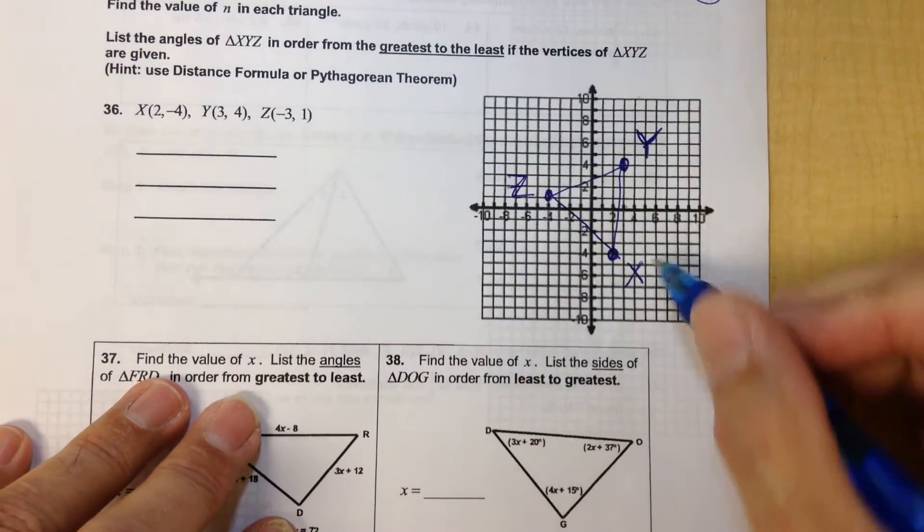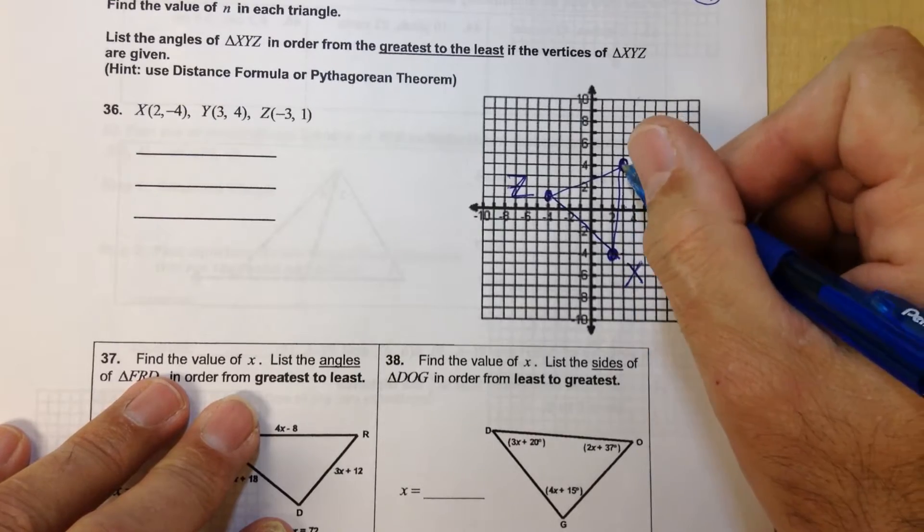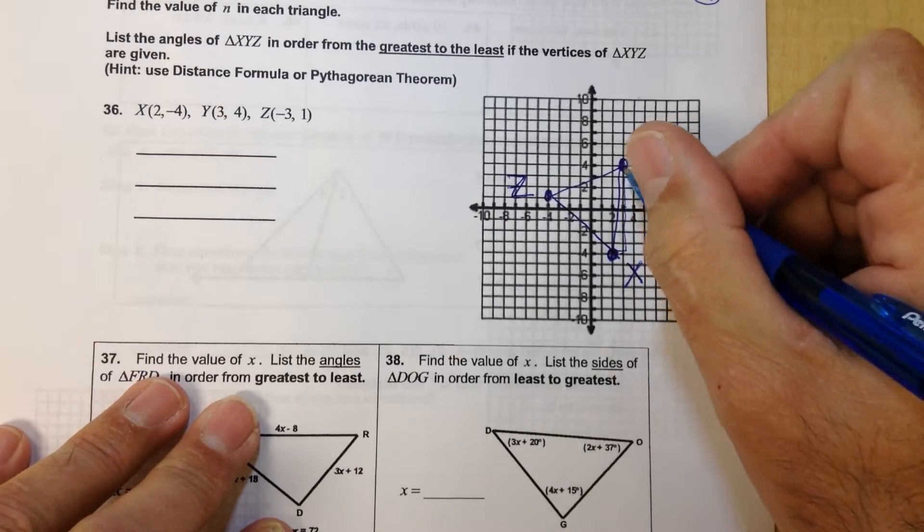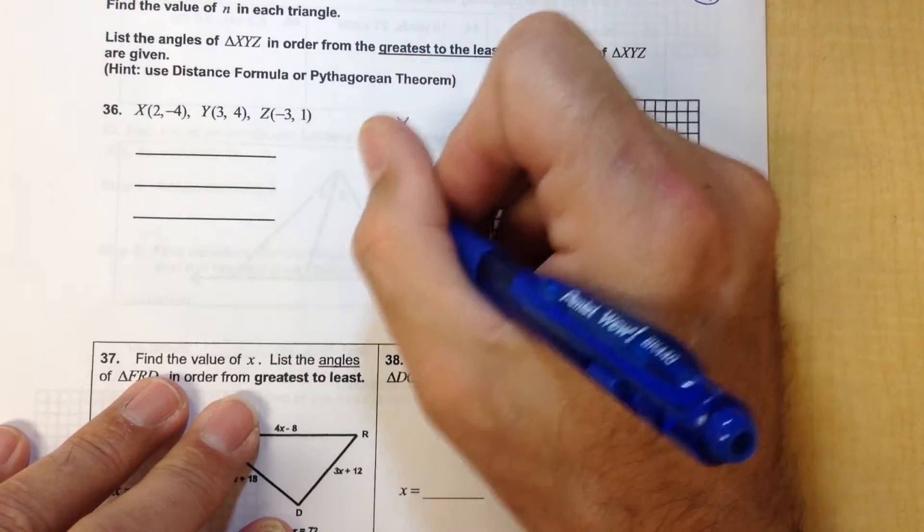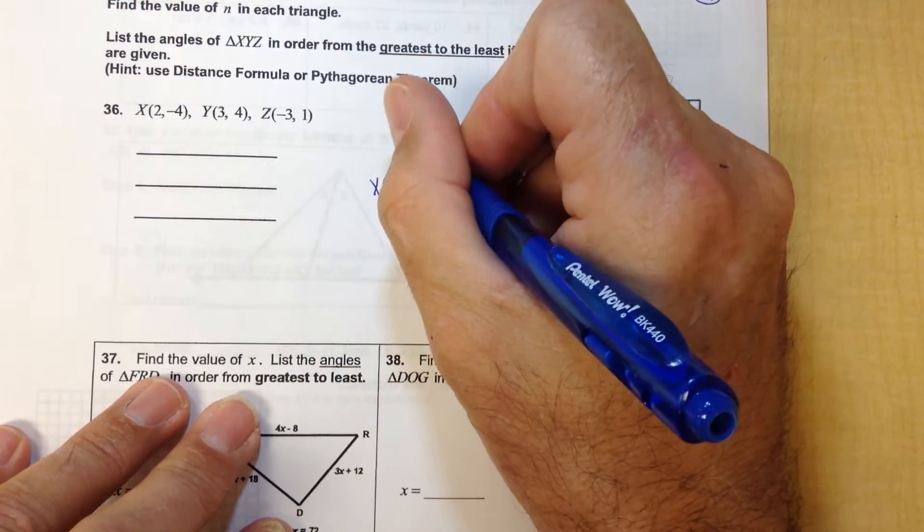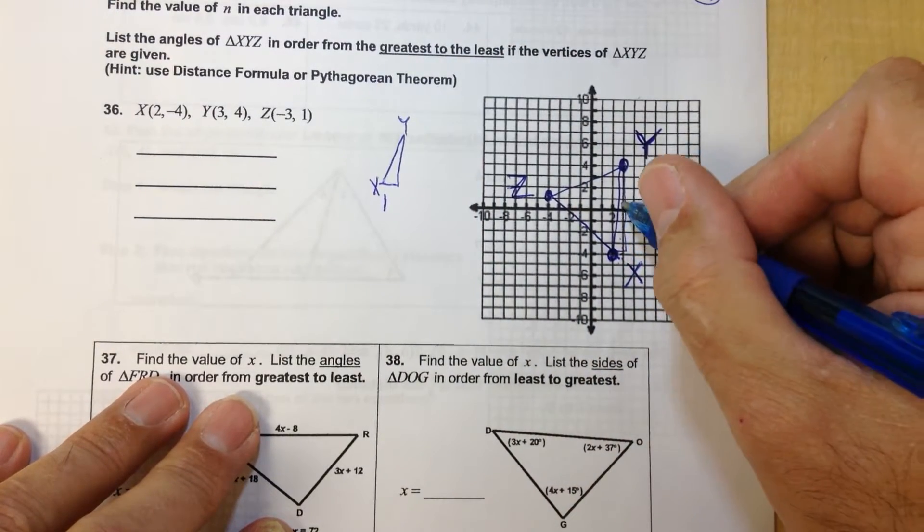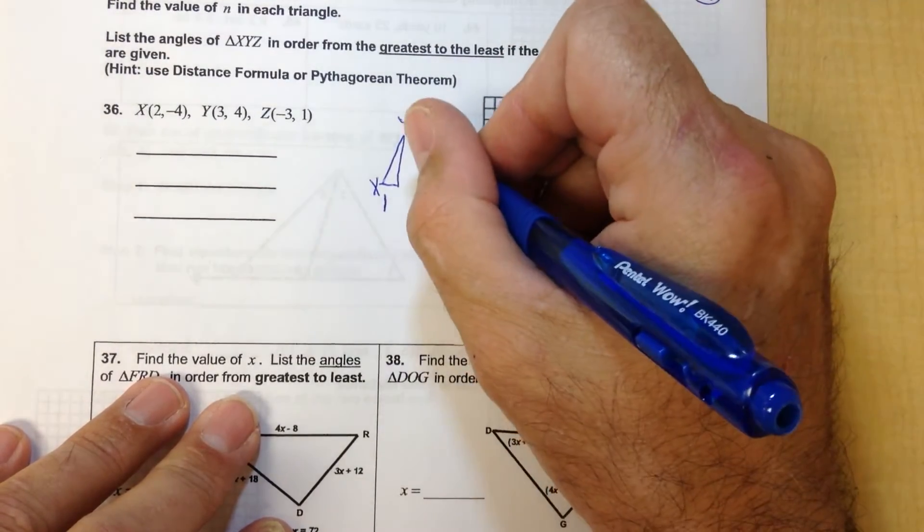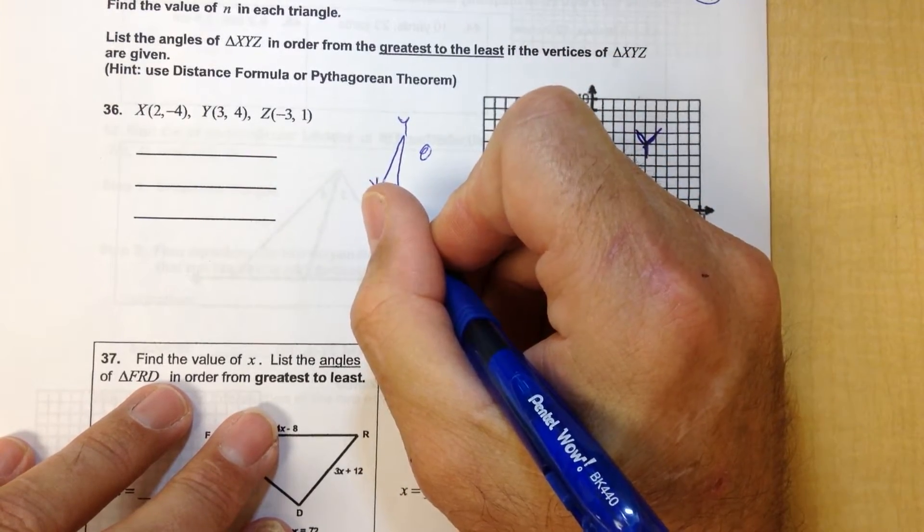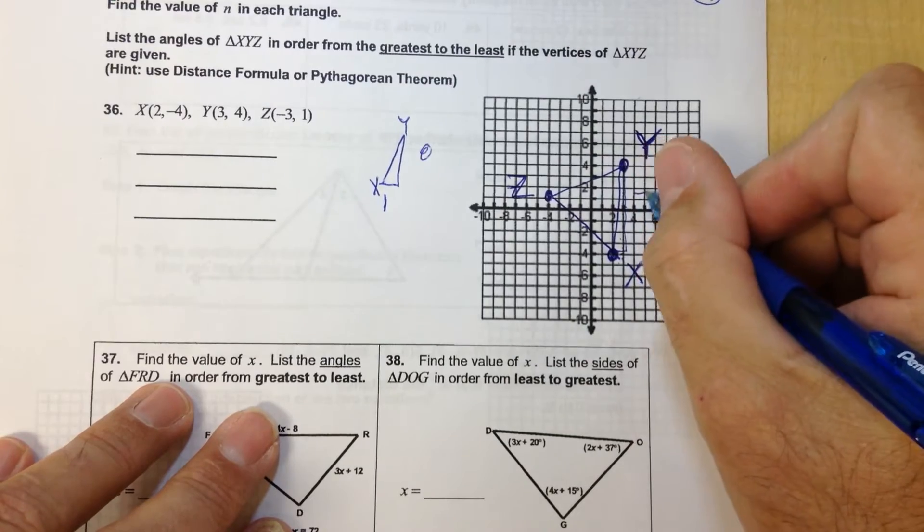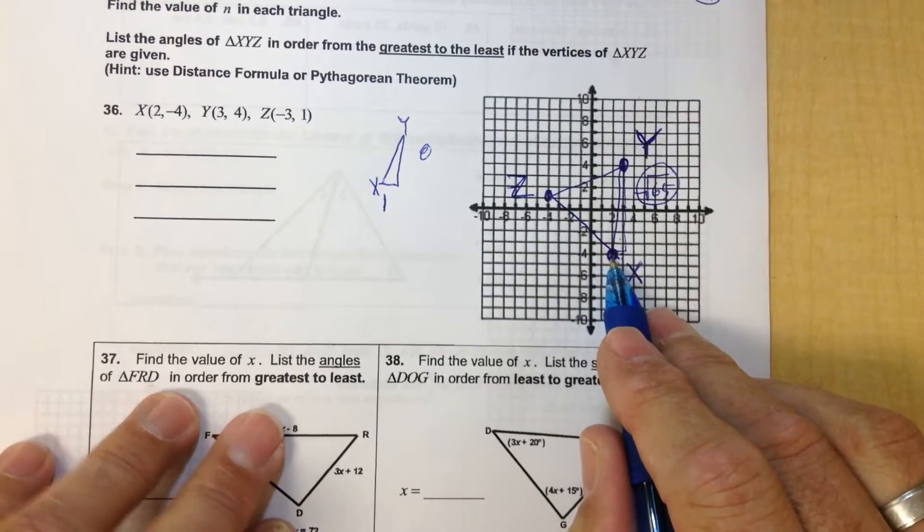Okay, now then define the distance from X to Y. To get from this point to this point, I go over 1 and up. So I go over 1, and I'm going to put this over here, Y and X. I'm going to go up over 1 and then up 1, 2, 3, 4, 5, 6, 7, 8. 8 times 8 is 64, 1 times 1 is 1. If you add them up, you get the square root of 65. So this edge right here is the square root of 65.